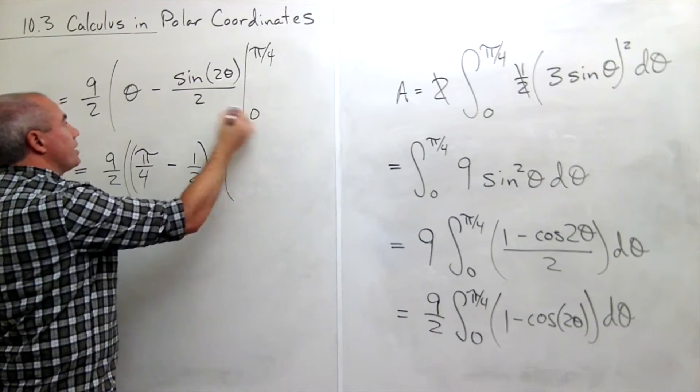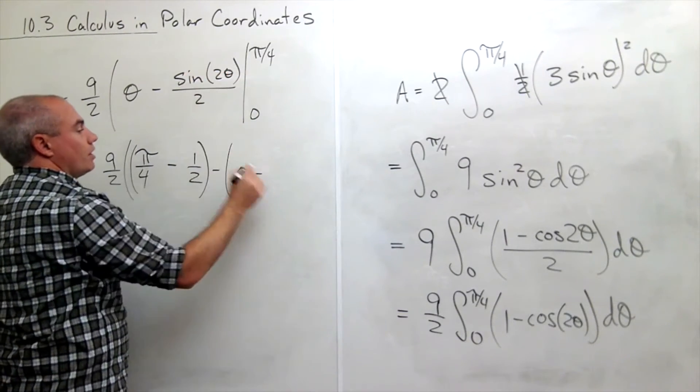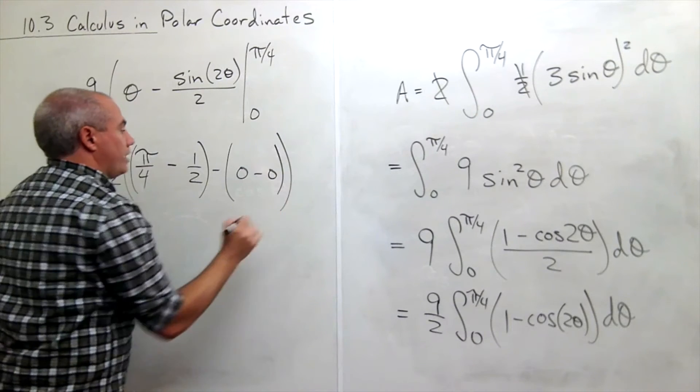Minus, plug in zero, I get zero. Minus, plug in zero, I get sine of zero, which is zero. And we're done.